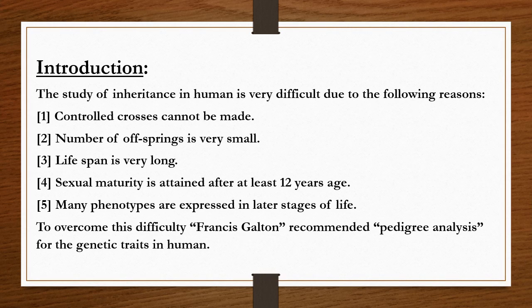The study of inheritance in humans is very difficult due to several reasons. Inheritance means transferring characters from one generation to another, and studying this in humans is challenging. First, controlled crosses cannot be made in humans. Second, the number of offspring is very small in human beings.